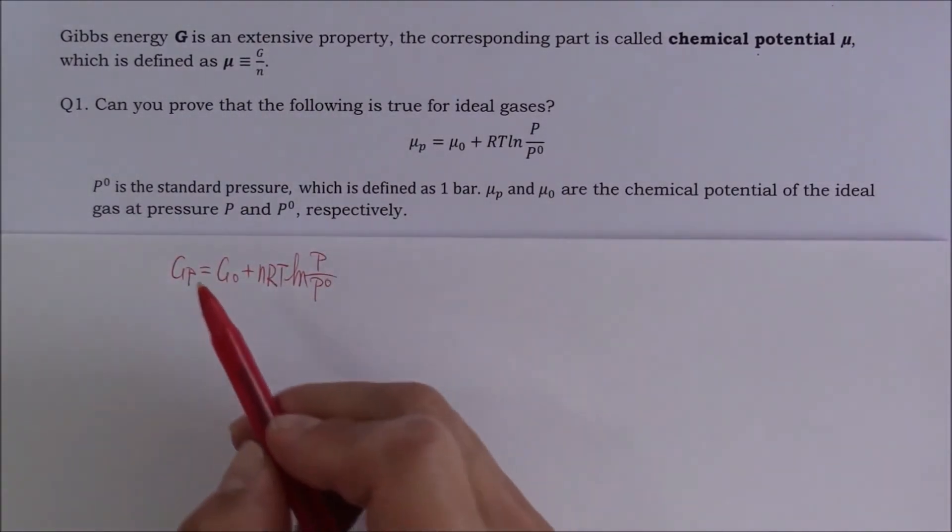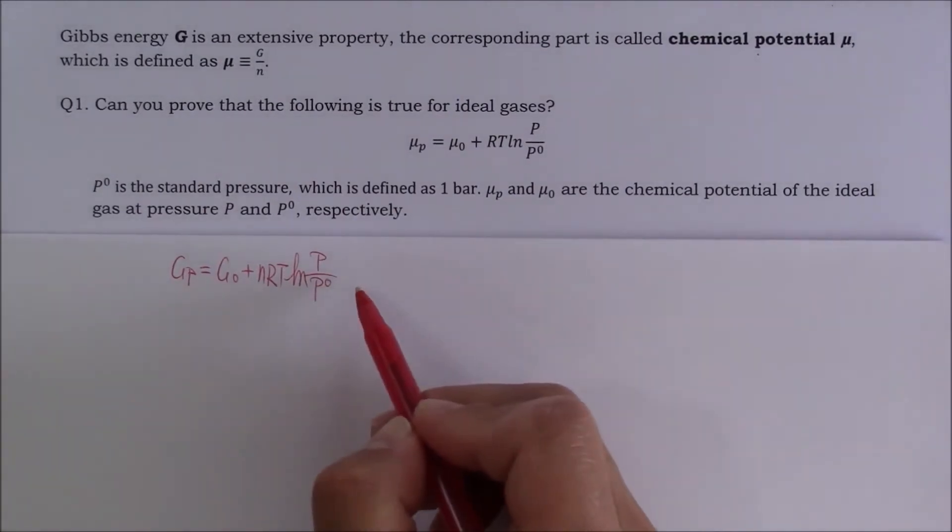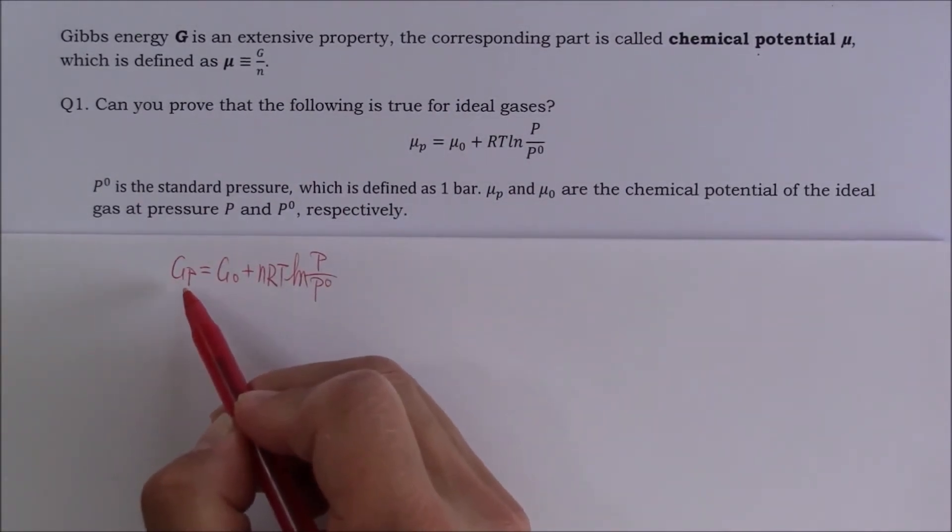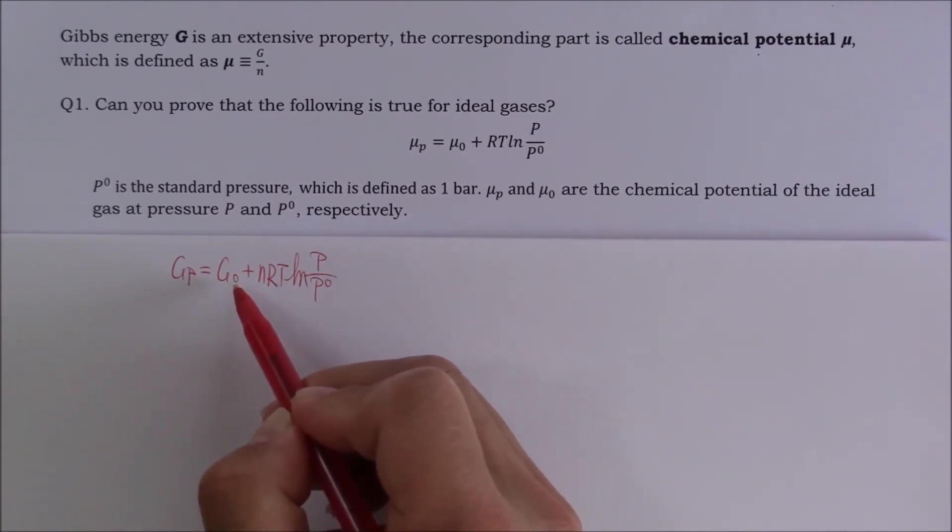If we divide by N on both sides, G_P divided by N will become μ_P. G_0 divided by N will become μ_0. Let's try it.